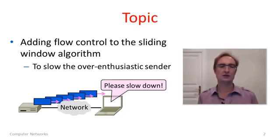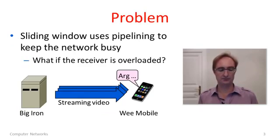Flow Control is an addition to the sliding window to deal with the problem of making sure that the receiver can handle the data that the sender is sending to it. It provides a way to slow down an over-enthusiastic sender. You might wonder whether this is a real problem. Do we need to worry about receivers not being able to handle data fast enough? Well, yes actually.